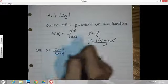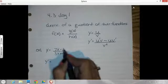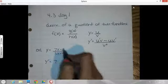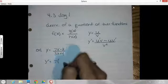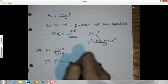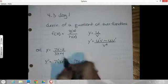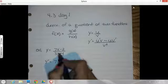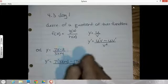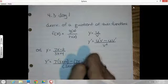So y prime will equal the derivative of the top, let's go into the 7x of 7, that's a 0, times by the bottom. The track keeps the top plane, times by the derivative of the bottom, that's a 3, so that's a 0, all over the bottom squared.